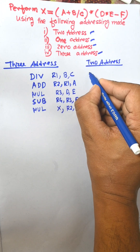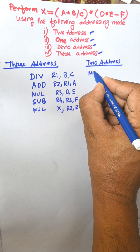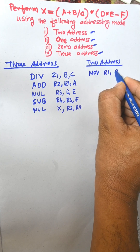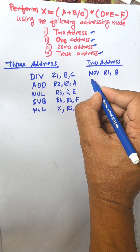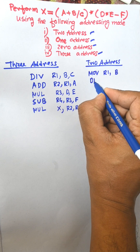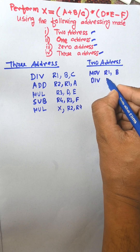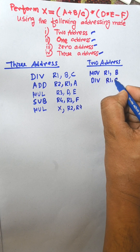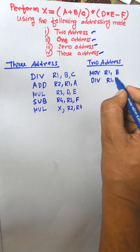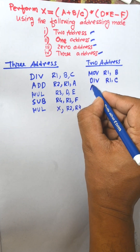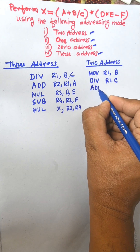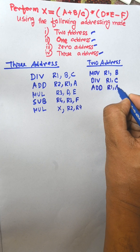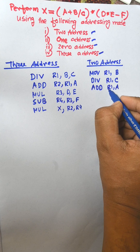First we need to transfer the data: MOV R1, M of B — M of B is transferred to R1. Then division R1, C — R1 and C are divided and the result is transferred to R1 again. Now add R1, A — the result is transferred to R1.